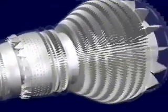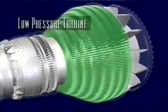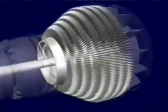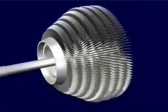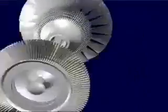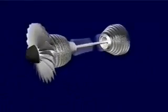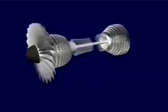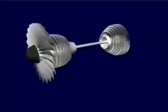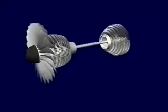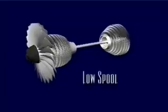Next, the air passes through the larger low-pressure turbine, which has two purposes. First, it extracts enough energy from the air to power the low-pressure compressor at the front of the engine core. These two components are connected via a second shaft, which actually passes through the center of the high spool. However, the second and more important job of the low-pressure turbine is to turn the large titanium fan blades up front. The fan is connected to the same shaft as the low-pressure compressor and low-pressure turbine — together, these three components make up the low spool.